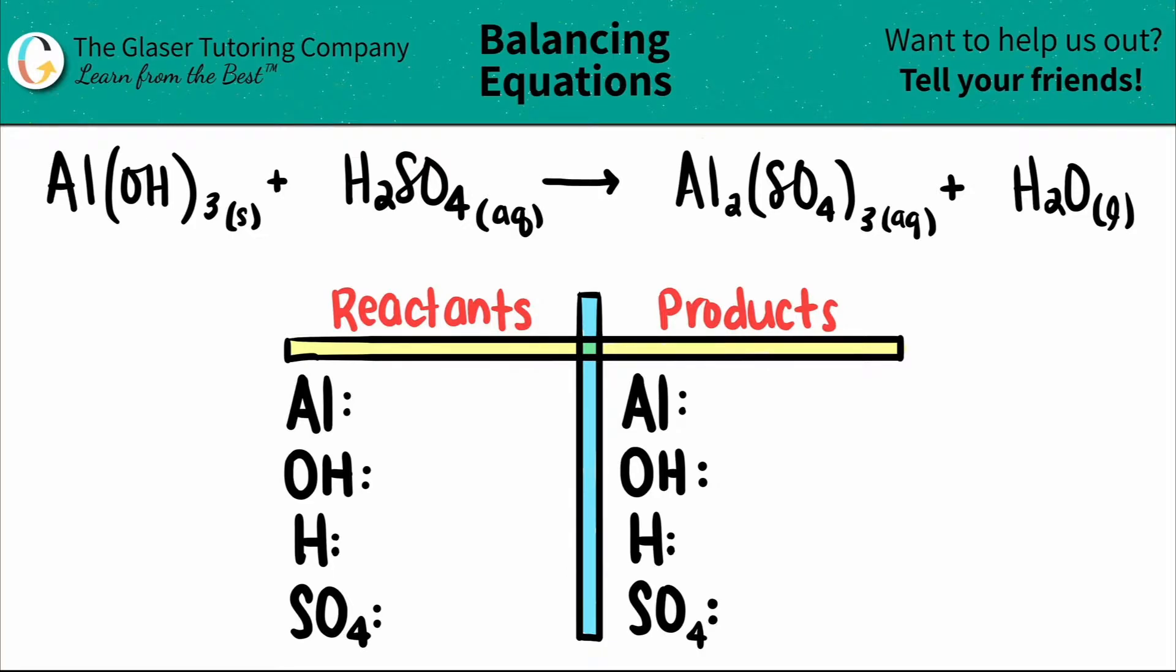Today, we are going to be balancing the equation of aluminum hydroxide, which is Al(OH)3, plus sulfuric acid, which is H2SO4, and that will produce aluminum sulfate, which is Al2(SO4)3, and then plus water, H2O.